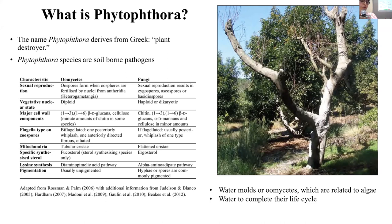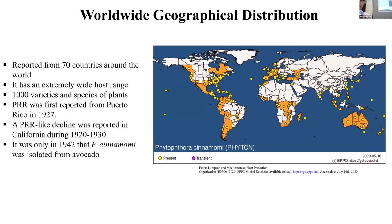The major component of the oomycete cell wall is cellulose, while in fungi we have chitin. These pathogens can produce motile spores called zoospores that are waterborne — they can swim in the soil-water interface and spread from one orchard to another through soil and water. Phytophthora root rot is caused by Phytophthora cinnamomi, a pathogen reported from more than 70 countries since around 1920, with an extremely wide host range of more than 1,000 plant species. It was first reported in the US in Puerto Rico in 1927, and in California between 1920 and 1930, but was isolated as Phytophthora cinnamomi in 1942.